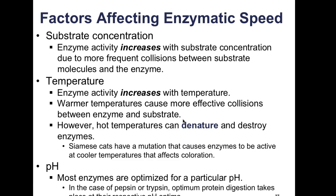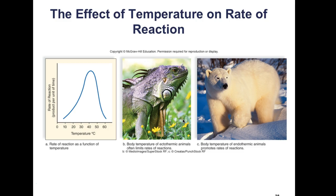pH also affects enzymes. pH is a measurement of hydrogen ion concentration in solution — higher hydrogen ion concentration means lower pH, or more acidic. Most enzymes are optimized for a particular pH. The optimal pH range is where the enzyme works best; outside that range, enzyme activity slows down. For example, pepsin and trypsin each have their own optimal pH for protein digestion. Around 40 degrees Celsius is where many enzymes work best.